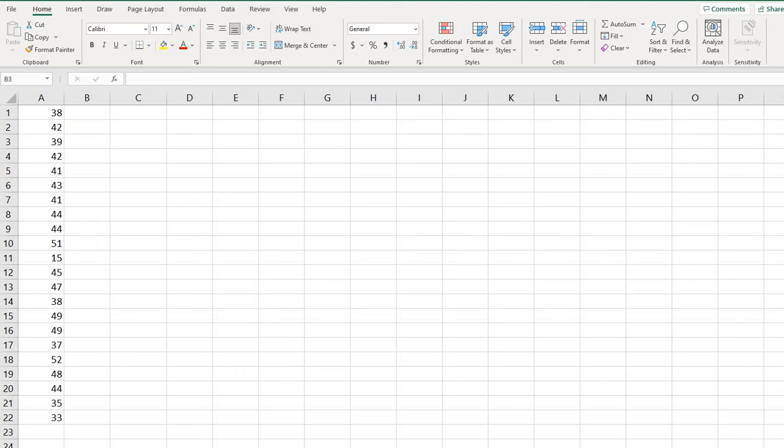You're going to need to start with some data in order to find the box and whisker plot. I have 22 data points already typed into Excel. You would just get your data from whatever data you're working with.